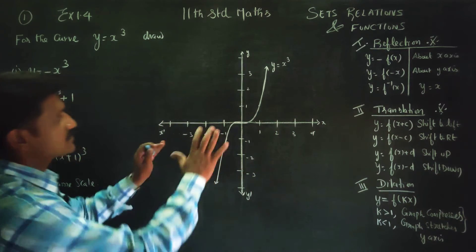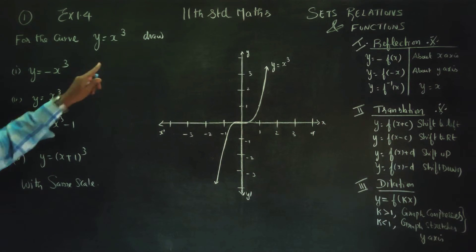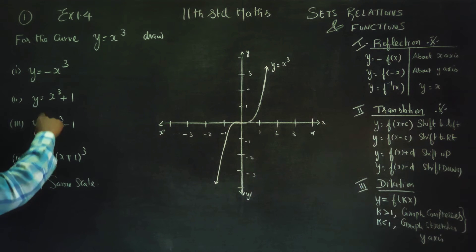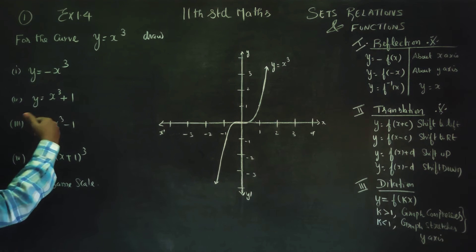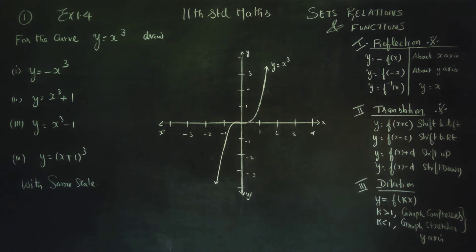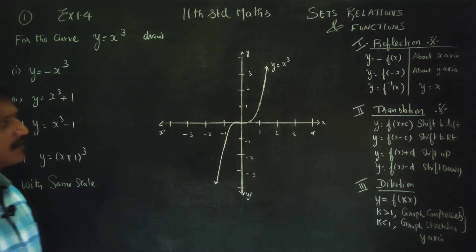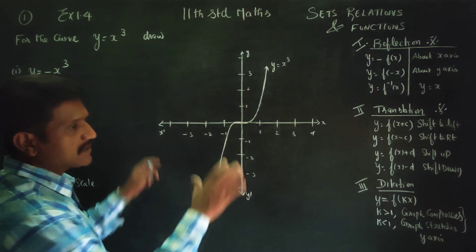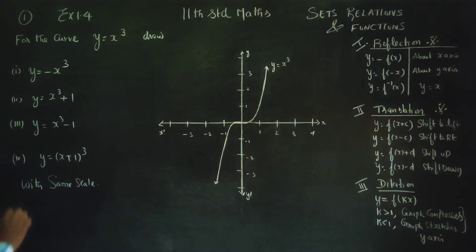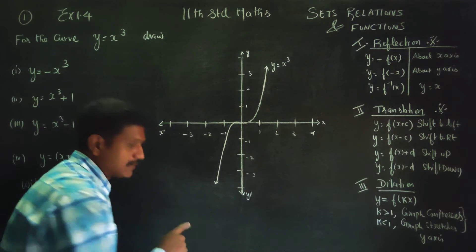So with this diagram of y = x³, you have to find y = -x³, y = x³ + 1, y = x³ - 1, and y = (x+1)³, all with the same scale. With a single diagram, you can represent all these without drawing any table.